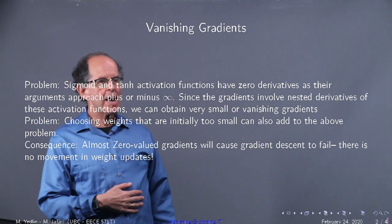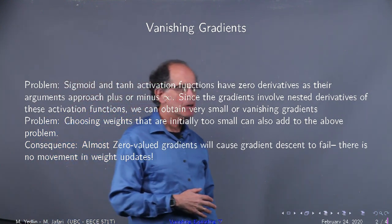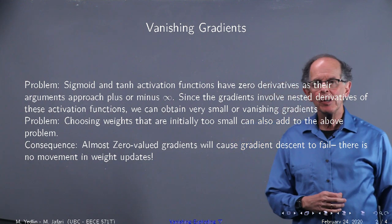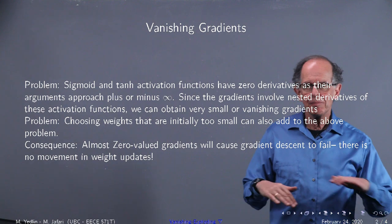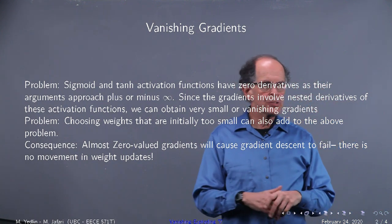One of the problems is with vanishing gradients. If you know both the sigmoid and the tanh activation functions have zero derivatives, they have basically horizontal asymptotes.